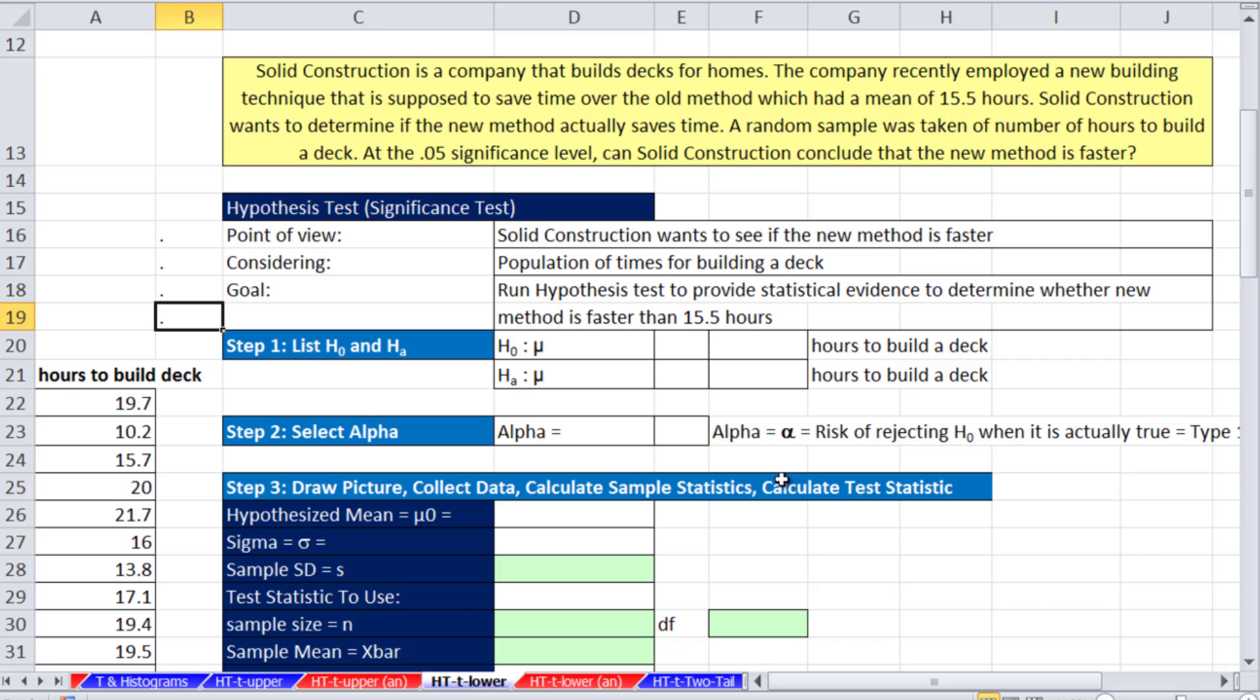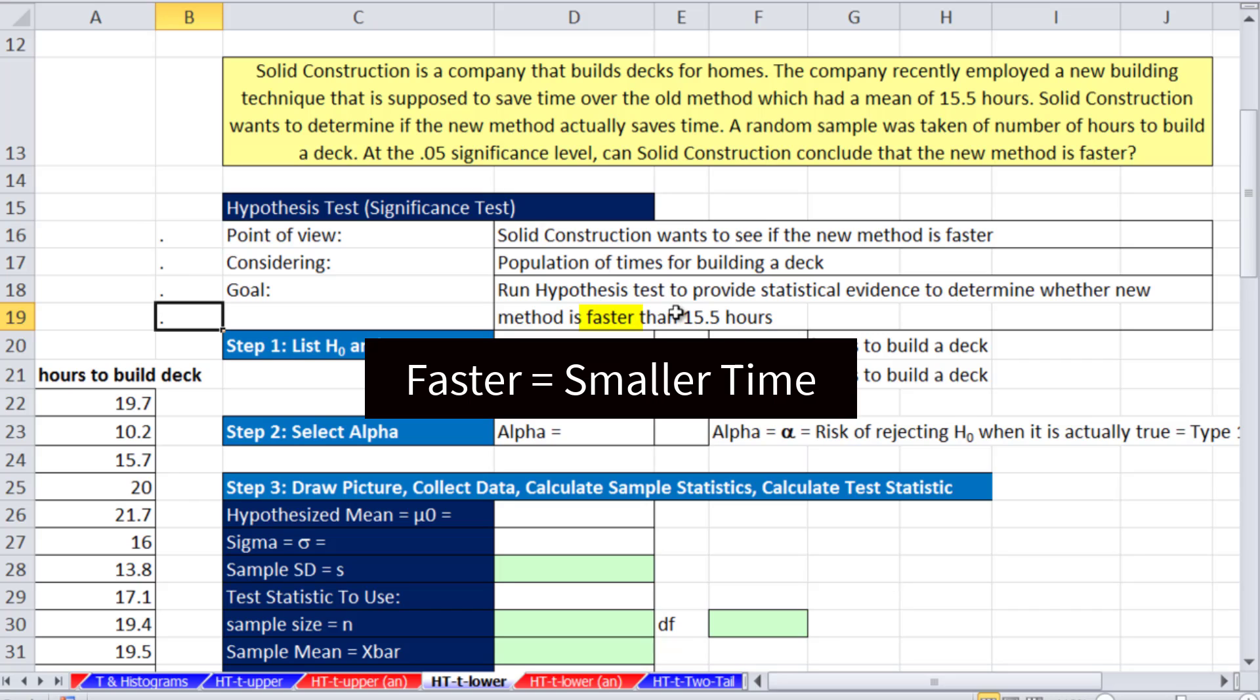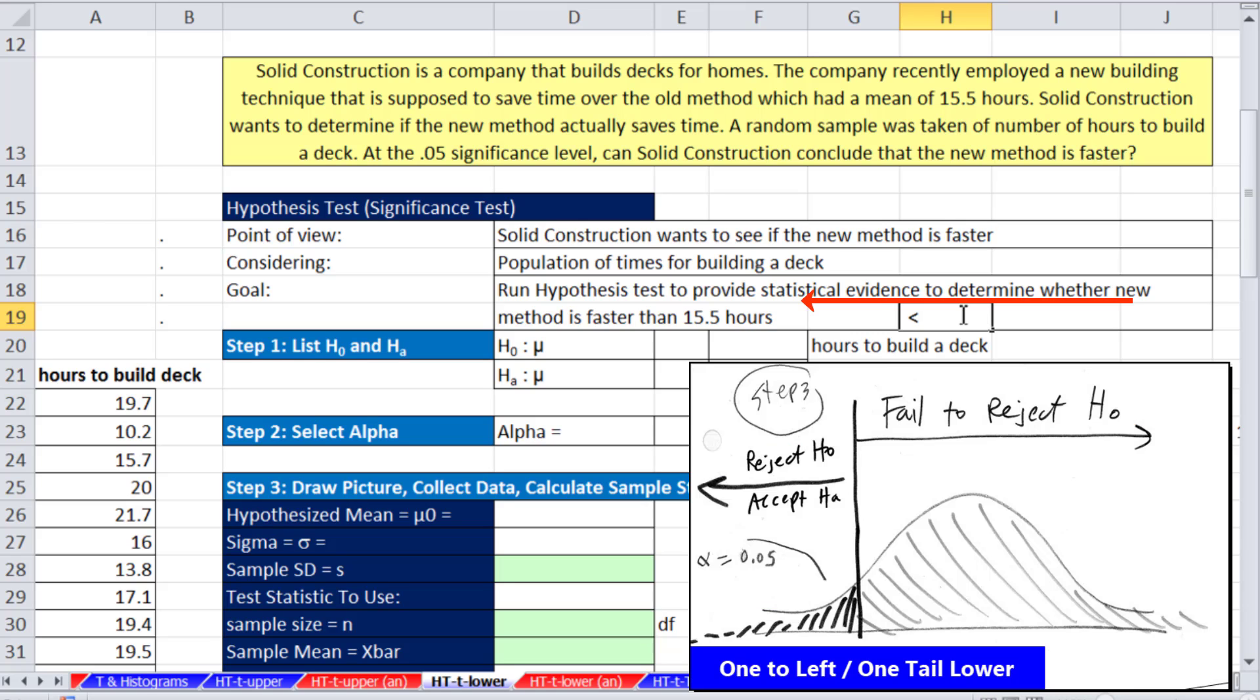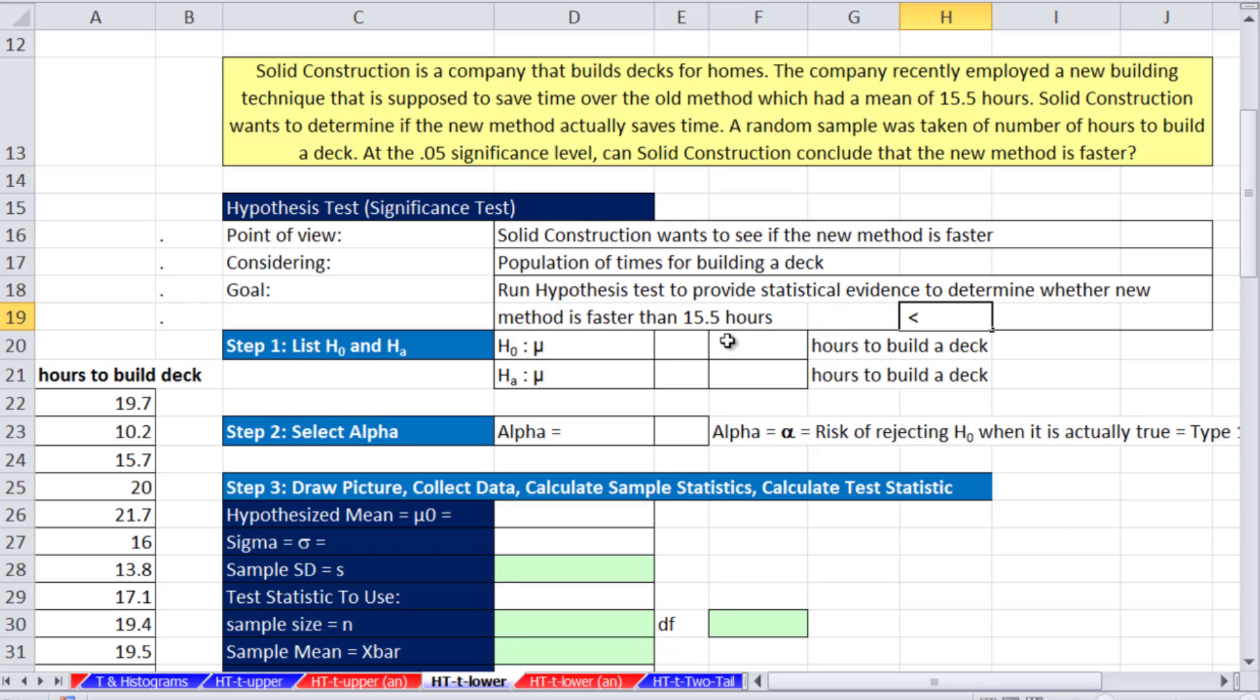Faster than 15.5 means we want this new method to take less time. The trick is you type your comparative operator less. It's pointing this way. So that means it's a one tail to the left. That little comparative operator that we just figured out from what is written here leads us to go to the alternative hypothesis first.